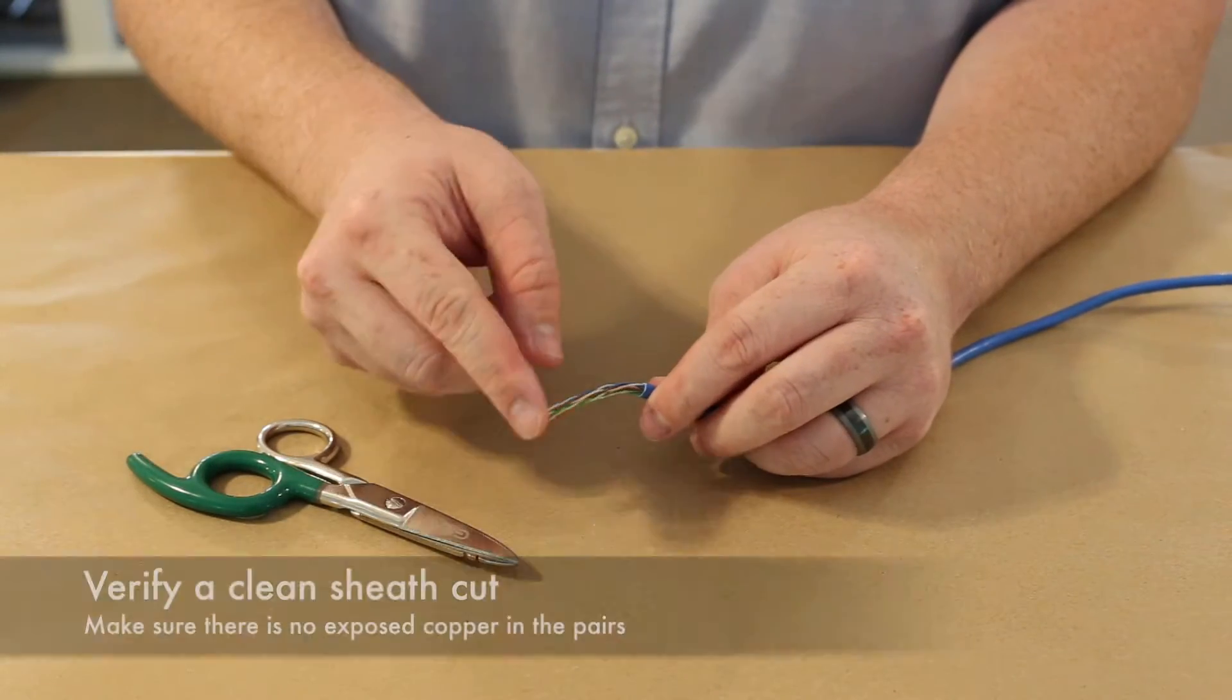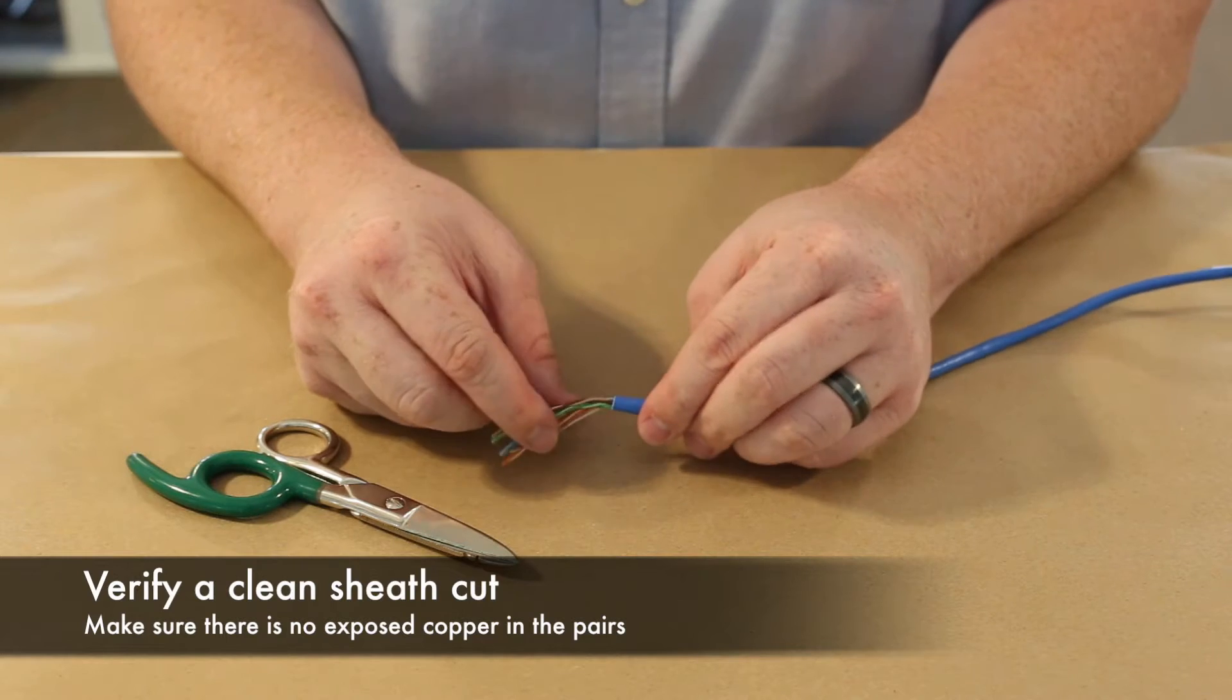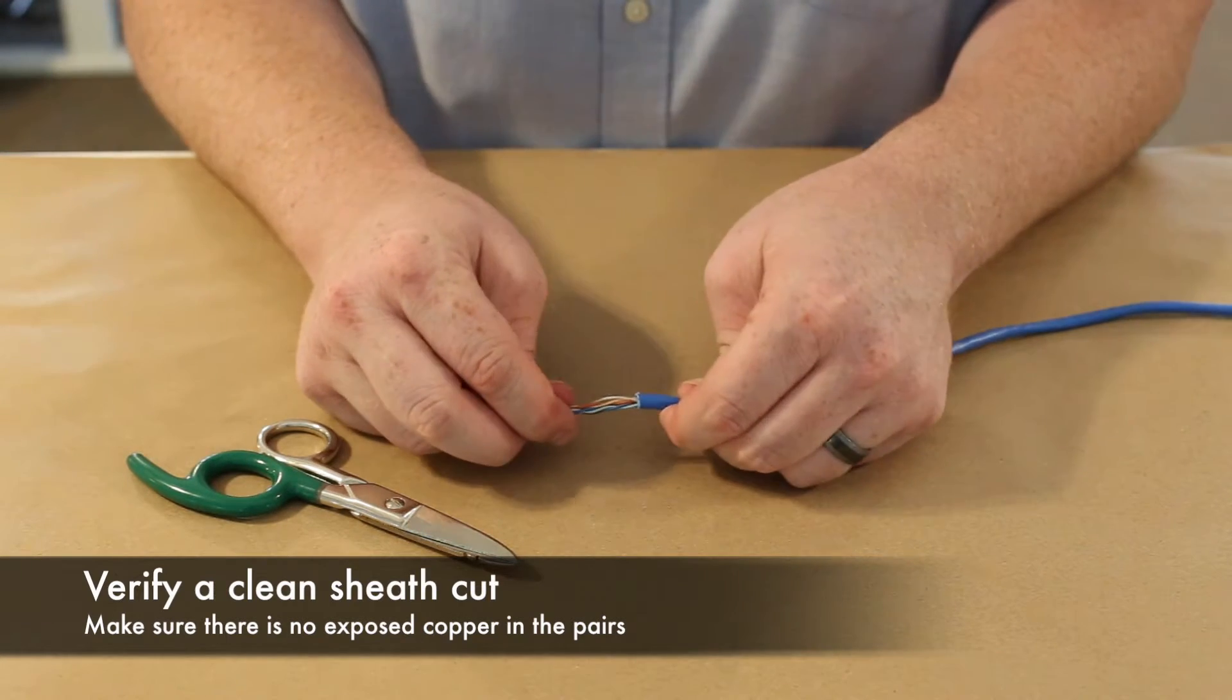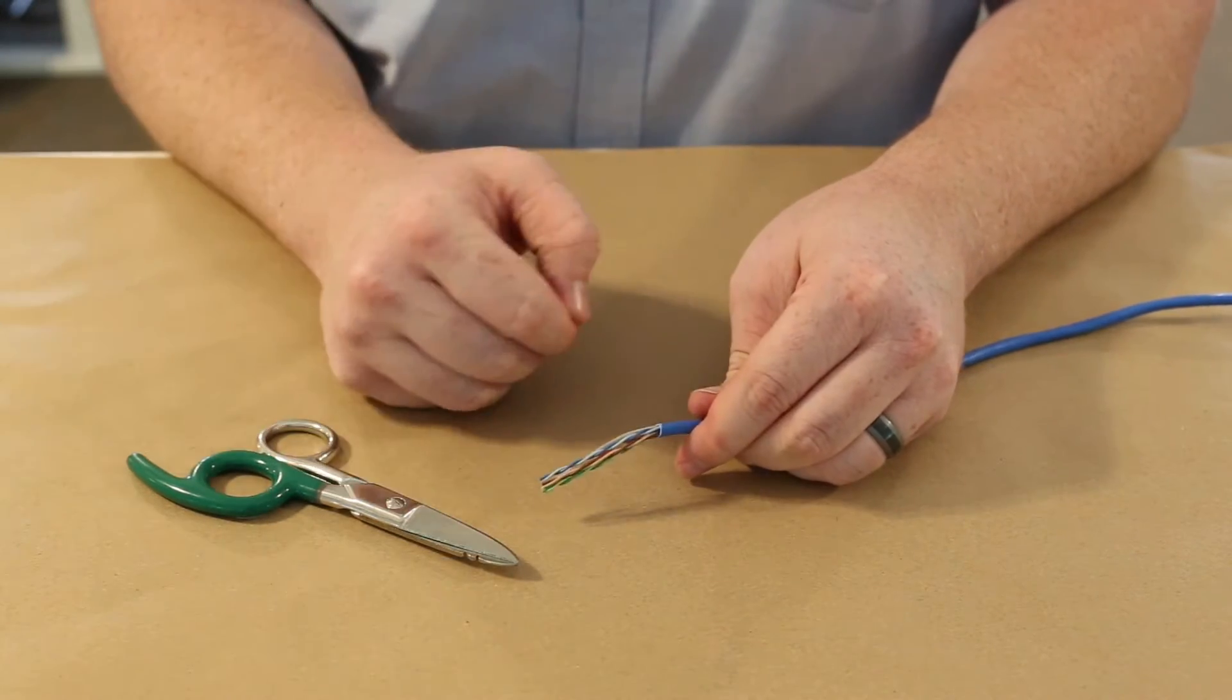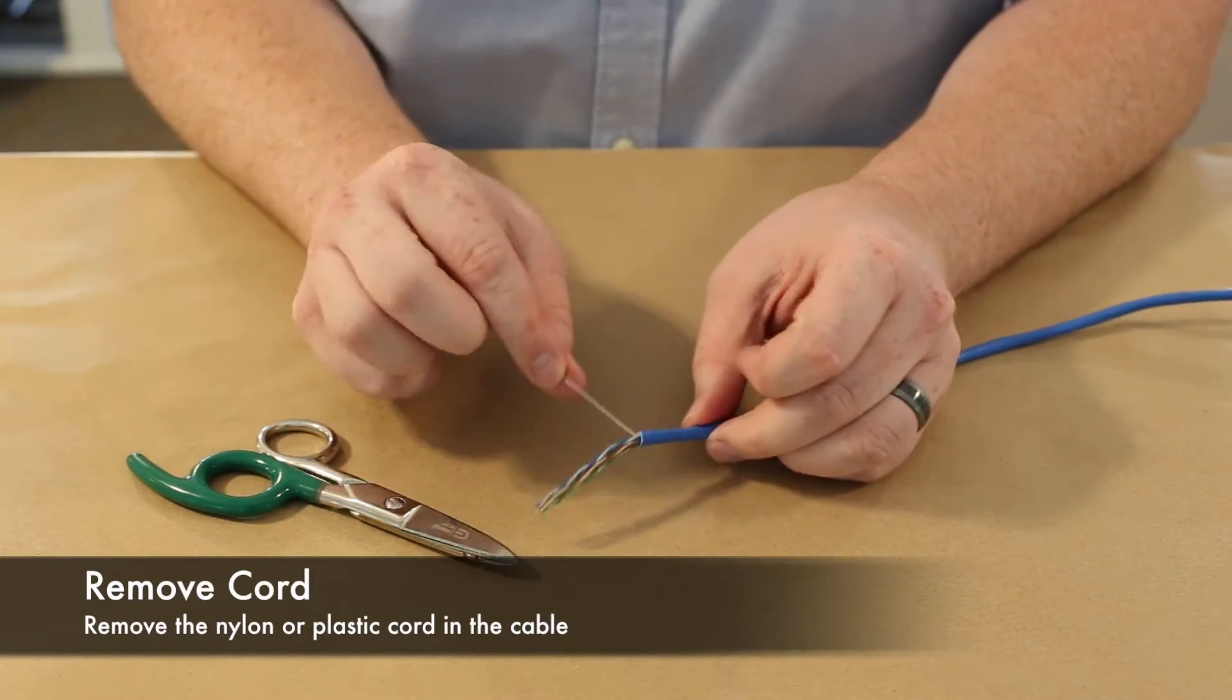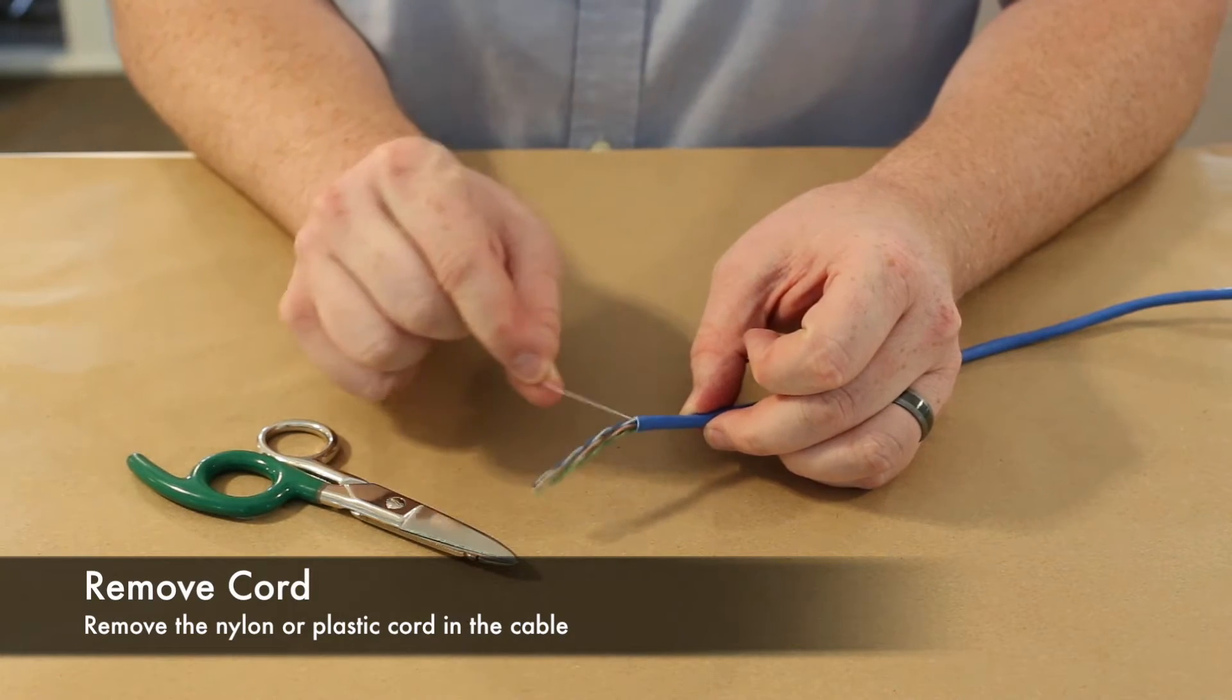Next you'll see your twisted pairs. I want to verify that I have not cut into the cables whatsoever. If I did see any exposed copper I would need to cut this off and start again. Next step we're going to remove the nylon cord inside.